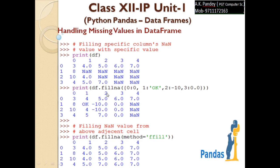So this is how you can check which null values are present, filter them, and fill null values either with your own common value, with column-specific values, or by using adjacent cell values. That is all for today's class and the rest of the pandas topics will be continued in the next class. Thank you very much.